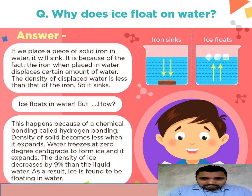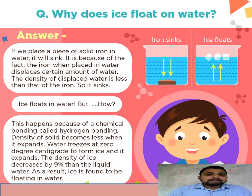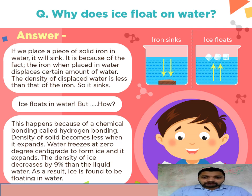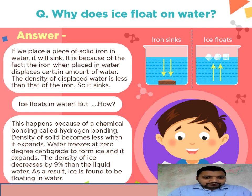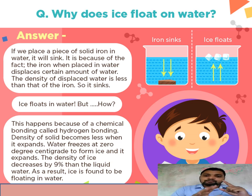Summary: If we place solid iron in water, it sinks because the density of iron is greater than the density of water displaced by it. For ice, the reverse is true — ice has less density than water, so it floats. The rule is: density more → sink; density less → float.